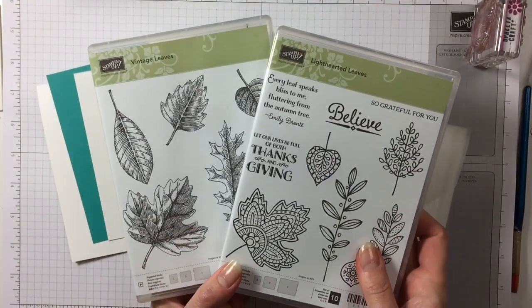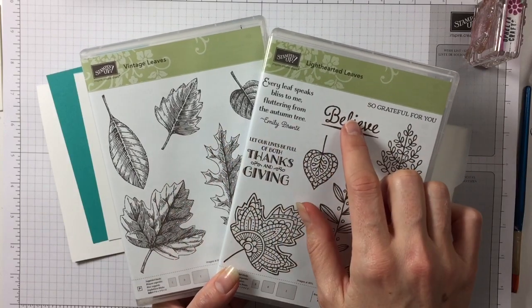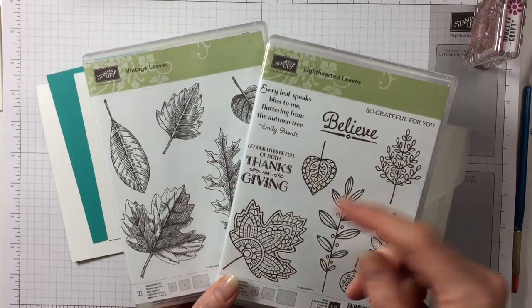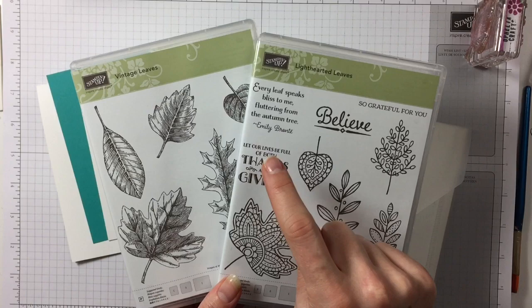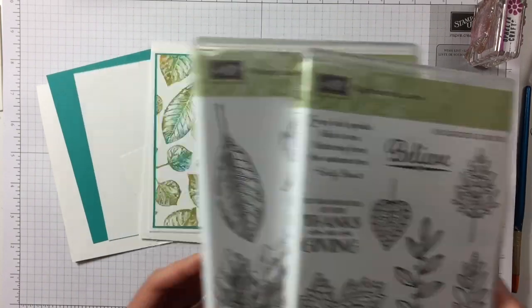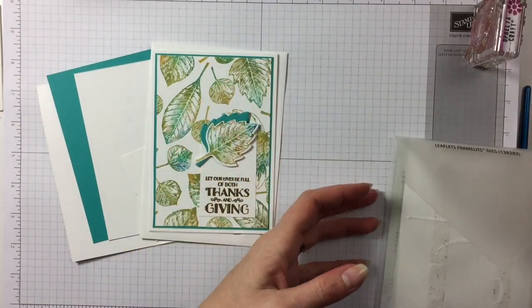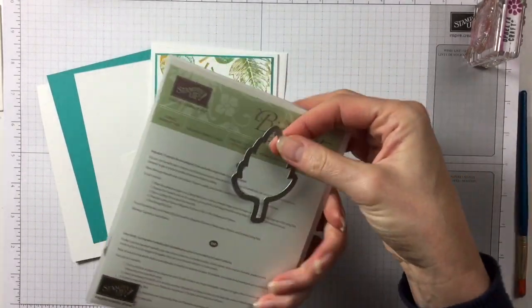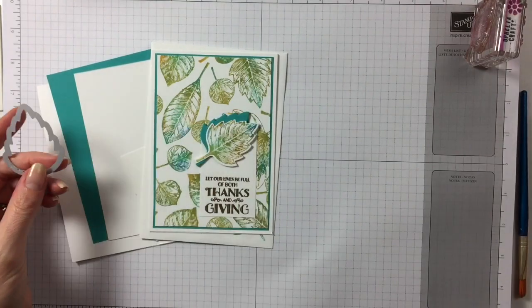So yes, we are still again using vintage leaves and lighthearted leaves. I just love these stamp sets. I can't help it. And this is the thanks, the sentiment for Thanksgiving that we are going to be using. I also will be cutting out my leaf and I'm using the dies for that. So that's the die in readiness.